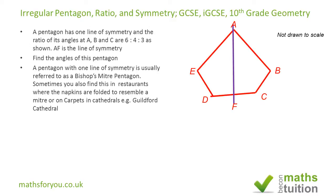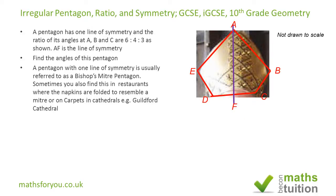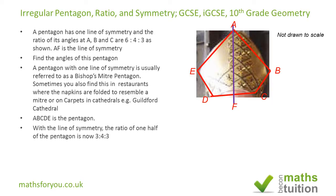With only one line of symmetry, this shape is sometimes called a bishops mitre pentagon, because the shape resembles a bishop's hat. Because AF is a line of symmetry, instead of the ratio being 6 to 4 to 3, it now becomes 3 to 4 to 3, because the line of symmetry bisects angle A and also bisects the pentagon itself.